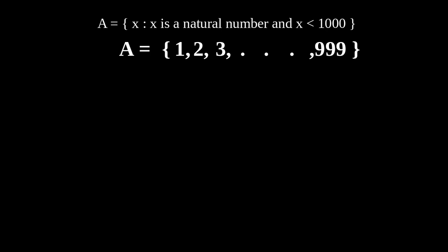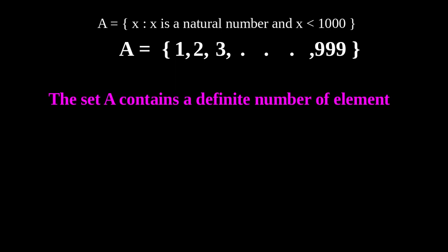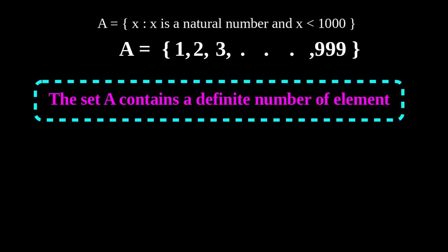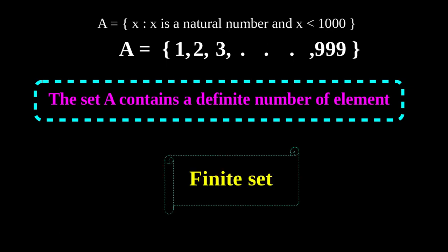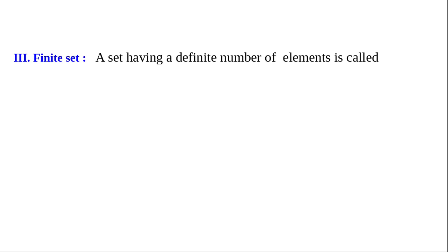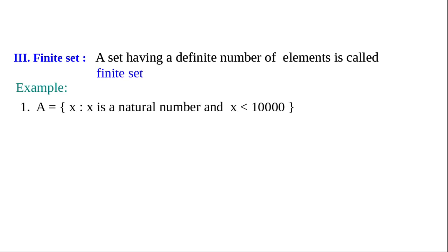Set A contains a definite number of elements. Such sets are called finite sets. A set which contains a definite number of elements is called a finite set. Write neatly into your notebook. Type 3: finite set — a set having a definite number of elements is called a finite set.